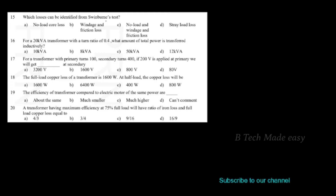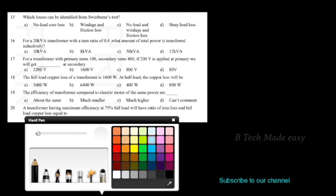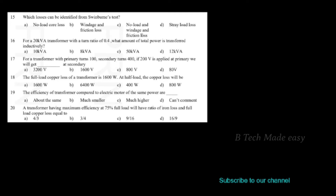Which losses can be identified from the Swinburne test? The options are: no-load core loss, windage and friction loss, no-load and windage and friction loss, or stray load loss. From the Swinburne test, which is conducted at no load, we can identify the no-load and windage and frictional losses. Option C is correct.